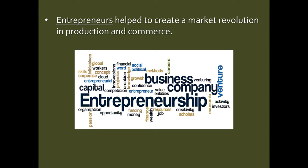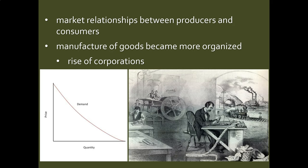Entrepreneurs are people who take on financial risks to open businesses. They might succeed, they might fail, but what happens is these entrepreneurs are helping to create this new way of doing business in America, a way of doing business that looks far more modern to us than something that happened during the colonial period. We're going to see what we call market relationships between producers and consumers — producers are constantly trying to gauge what customers want, how much they'll pay. Consumers have a plethora of choices among products, and with every purchase they're basically voting for one producer over the other. We're also going to see a far more organized manufacture of goods as corporations come online.